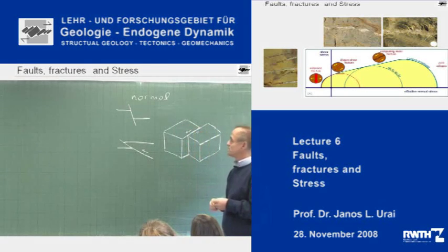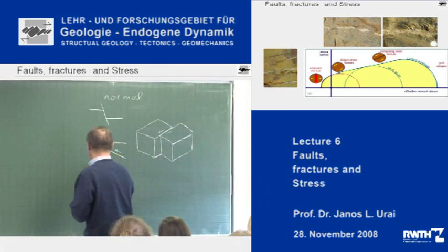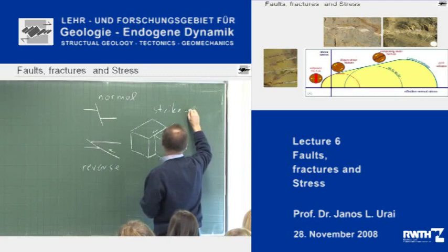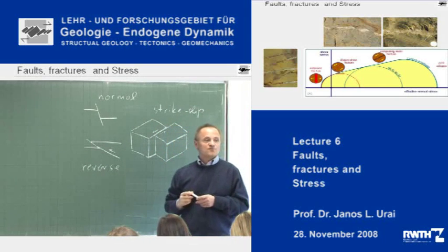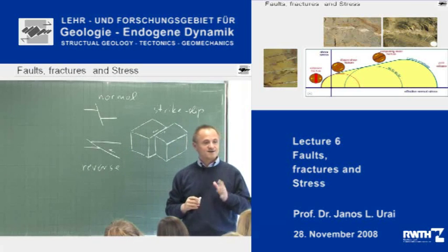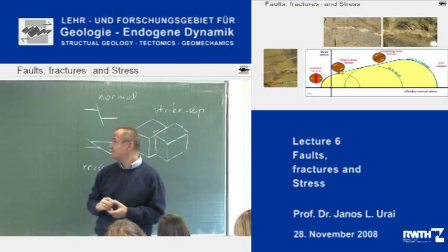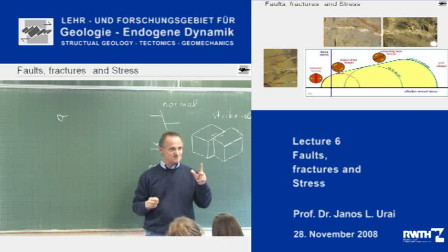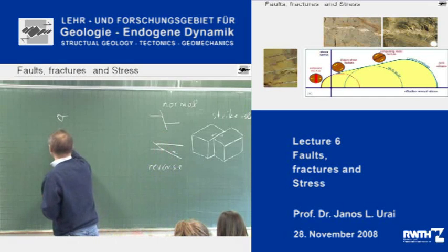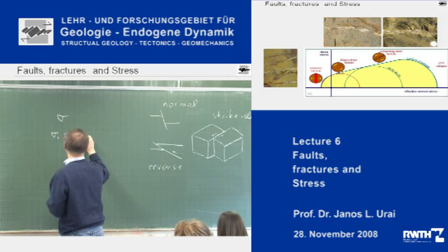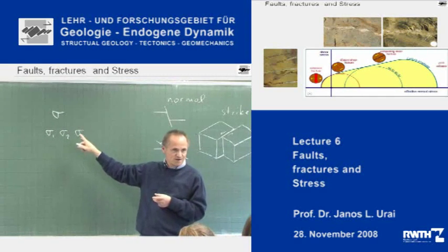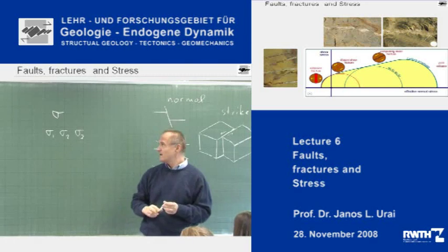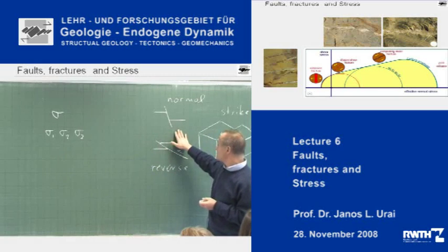The reason we have three main classes of folds is that the stress tensor sigma has three principal directions: sigma 1, sigma 2, and sigma 3. If you plot this in normal space you get the stress ellipsoid, and the three main axes of the stress ellipsoid are sigma 1, sigma 2, and sigma 3. Because there are three principal stresses, we also have three classes of folds.